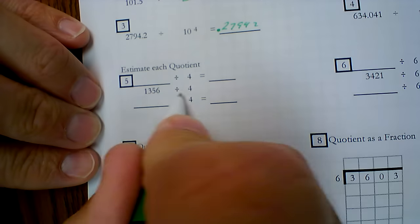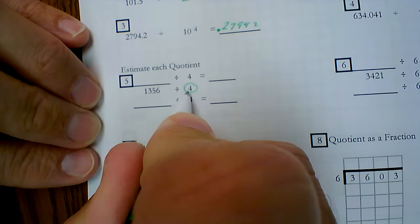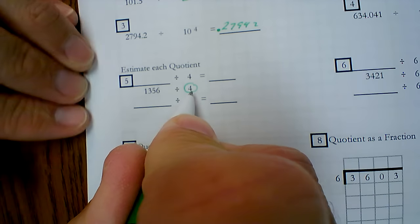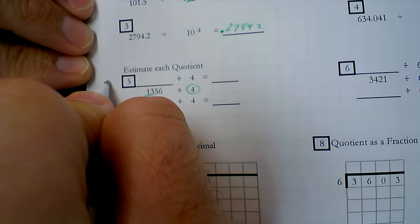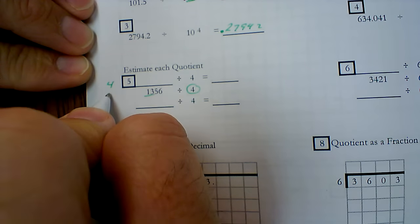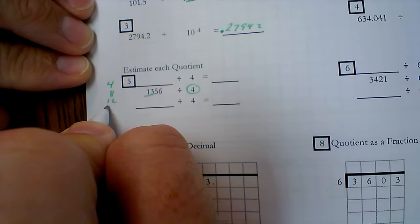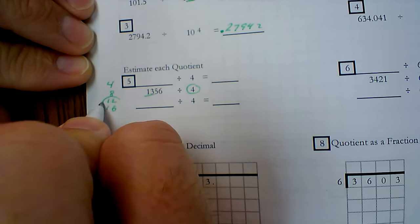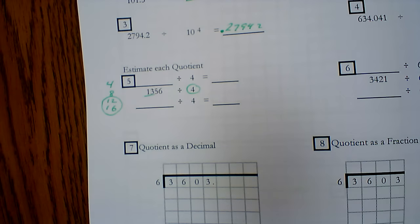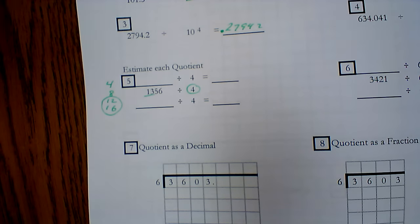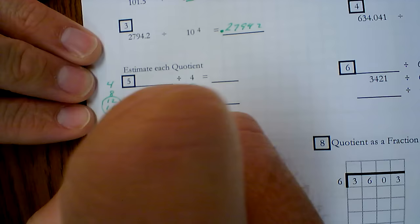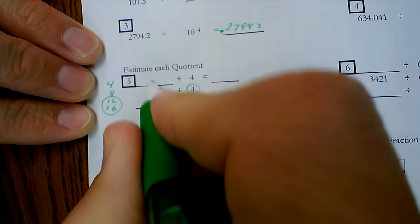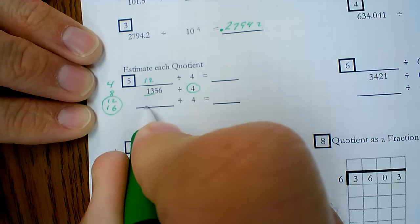Alright, estimating each quotient. Now, I'm going to count by fours because that's my divisor, because I'm splitting this into four groups until I pass 13. Here's what makes estimating quotients so much different: I want my numbers to come out even. It's so much easier when I divide by a number that comes out even. There's nothing left over.